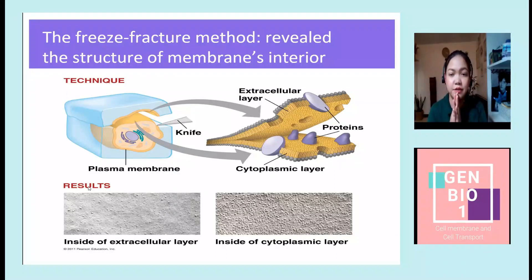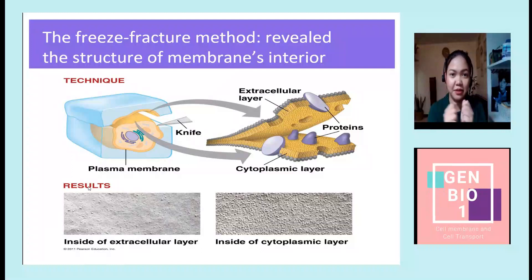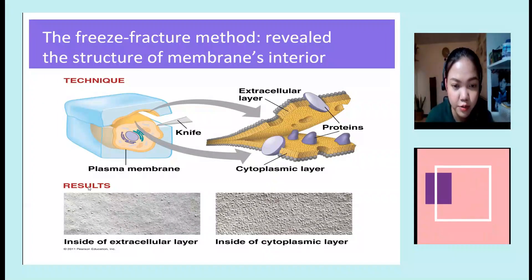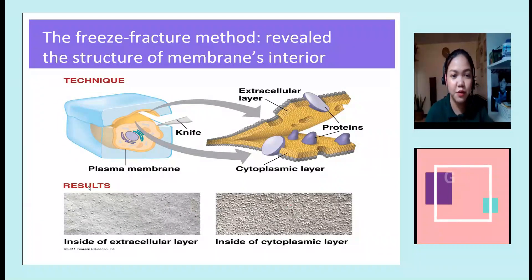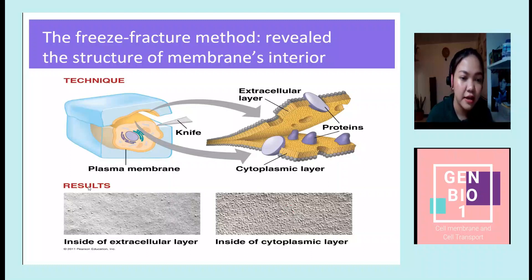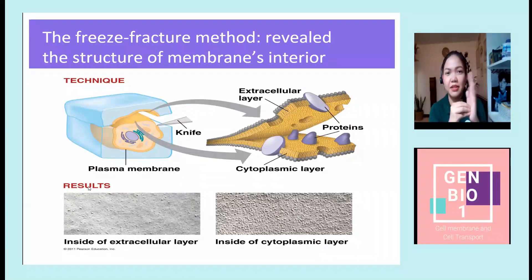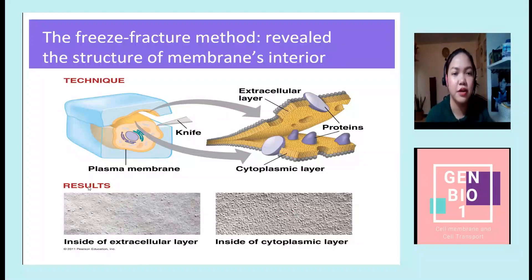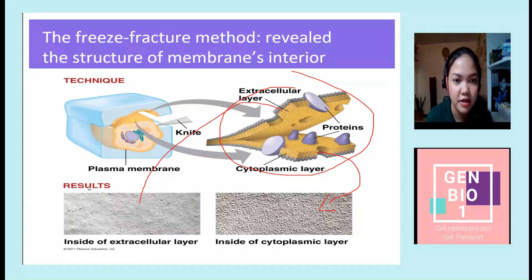The freeze-fracture method splits a membrane along the middle part of the bilayer, somewhat like opening a peanut butter sandwich. Afterwards, they observed it under the microscope. They saw cobblestone-like textures — the surface wasn't smooth. Those bumps are the proteins. The inside of the extracellular layer was somewhat smoother, because — like opening a sandwich — the peanuts go to one side, leaving the other side smoother. This is the cytoplasmic layer with proteins, and this is the extracellular layer.